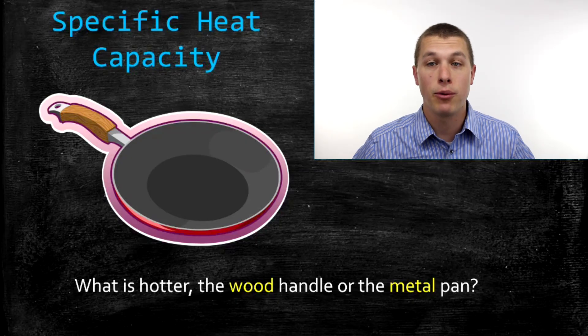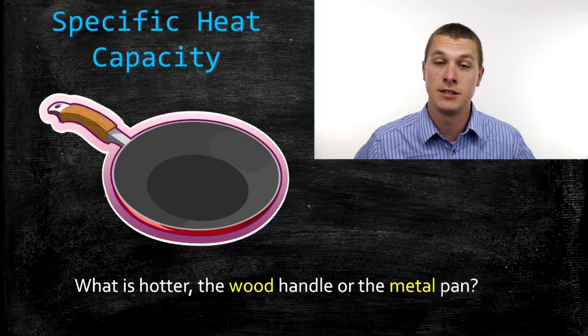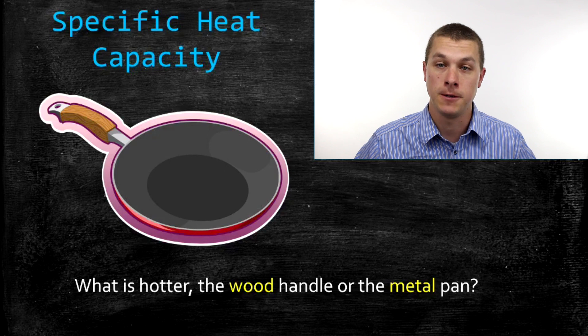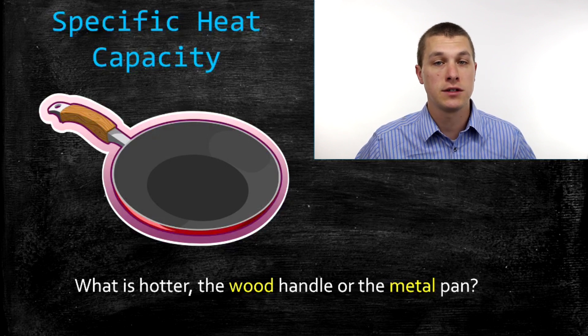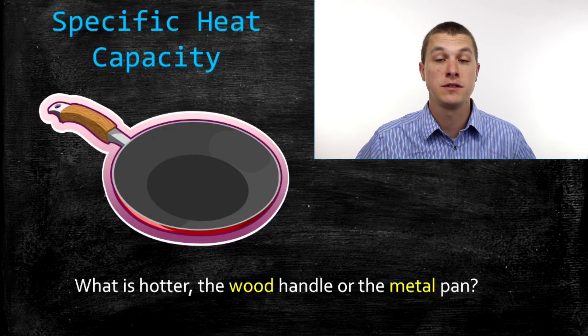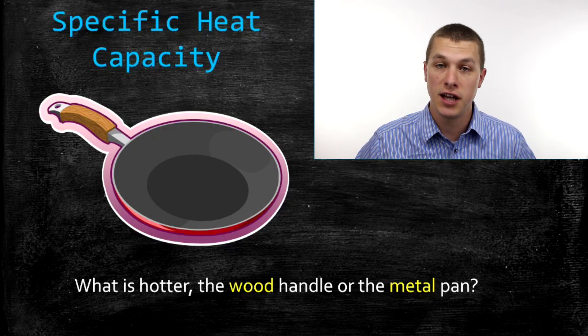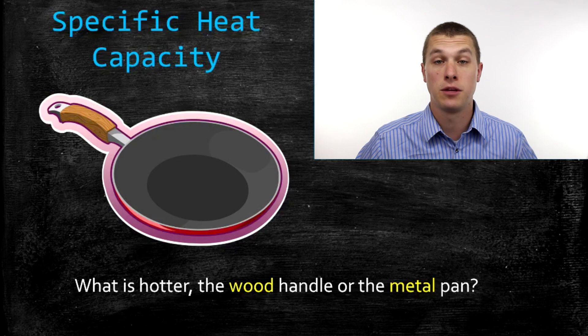Welcome to Real Chemistry. Today we're going to talk about specific heat capacity, which helps us understand why some things are really easy to heat up and some things are more difficult to heat up.